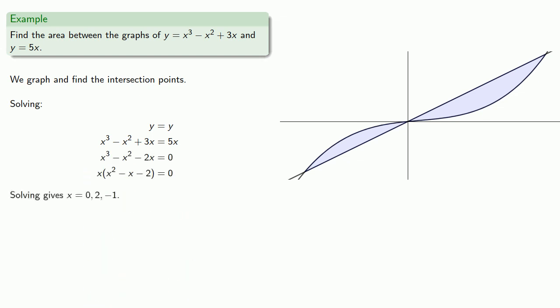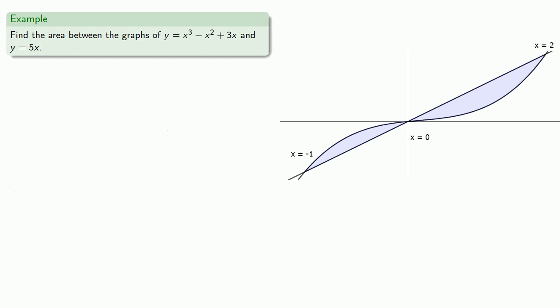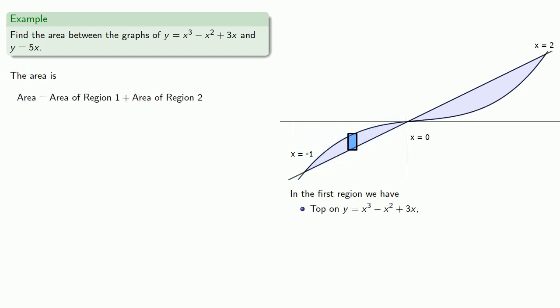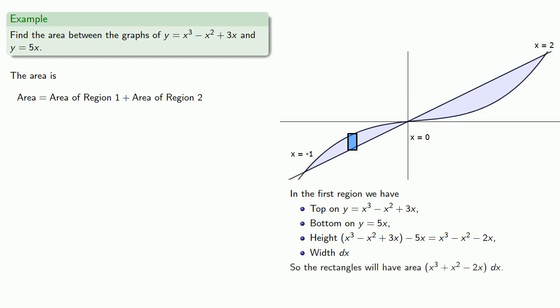Solving gives us x equals 0, 2, and negative 1. Notice the area of interest consists of two regions. In the first region, we draw our representative rectangle: the top is on y equals x cubed minus x squared plus 3x, the bottom is on y equals 5x, and the height is top minus bottom. The width is dx, so the rectangles have area x cubed plus x squared minus 2x, times dx.